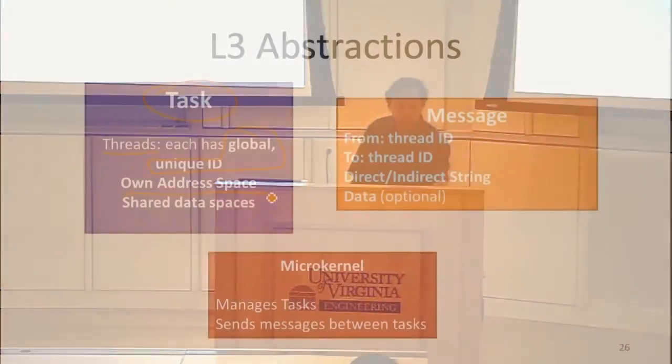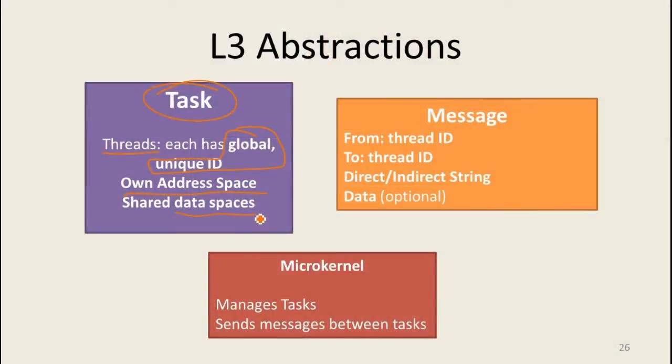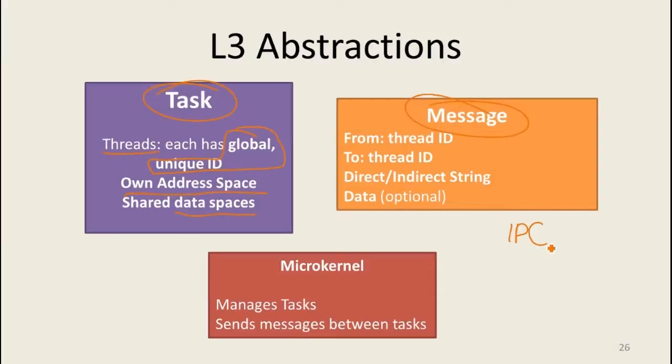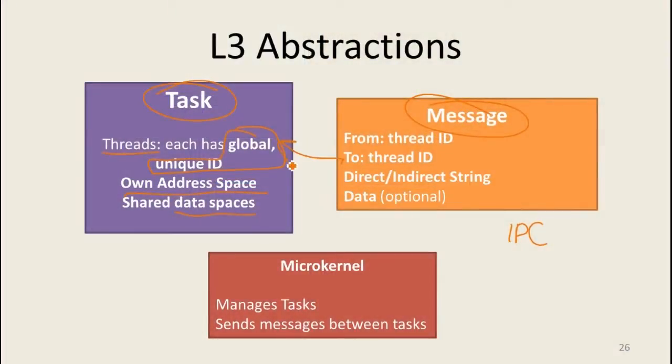A task owns its own address space, making it like a process, and it can also have some shared data — very similar to the task abstraction in Rust. The other abstraction L3 provides is a message, which is how you communicate between tasks. A message has a sender thread ID and a destination thread ID, using those unique IDs associated with each thread, and it can have some contents.